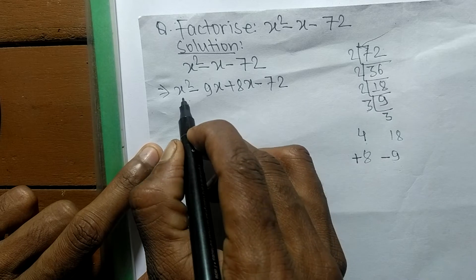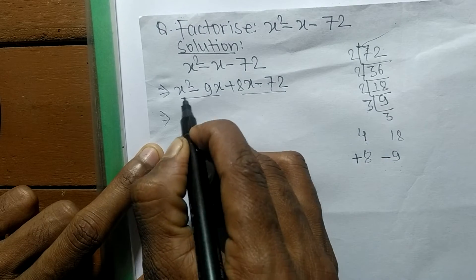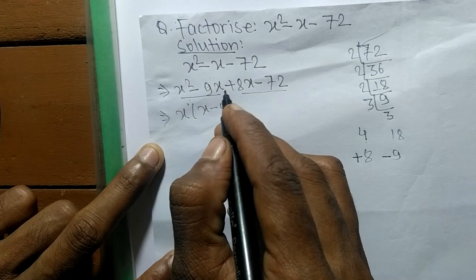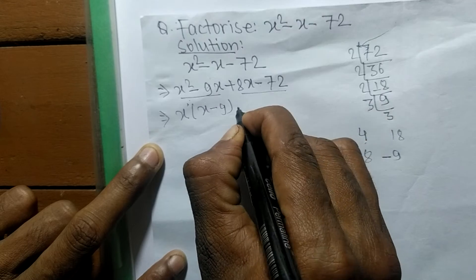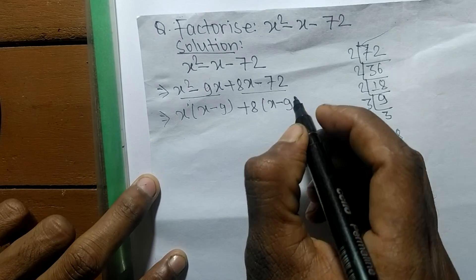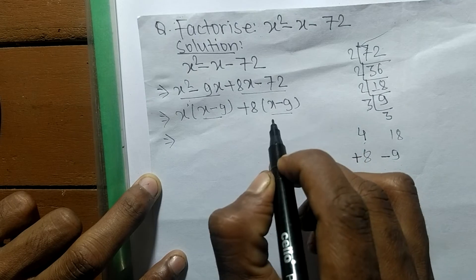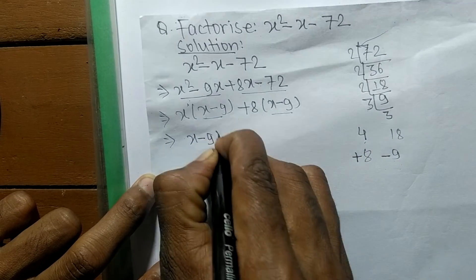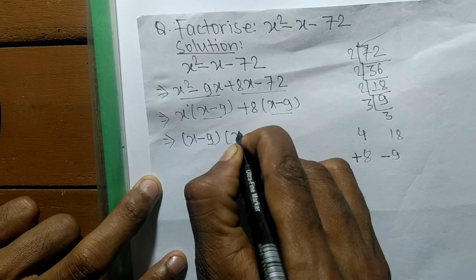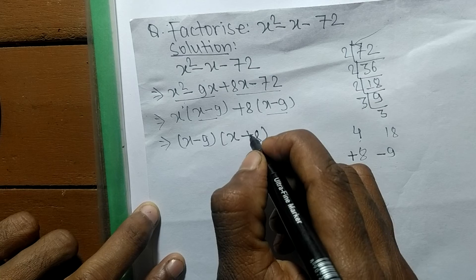Now we separate into two pairs: the first pair is x squared minus 9x, and the second pair is 8x minus 72. In the first pair, the common factor is x, leaving x minus 9. In the second pair, the common factor is 8, also leaving x minus 9. Since x minus 9 is common in both, we factor it out, giving the remaining terms x and plus 8.